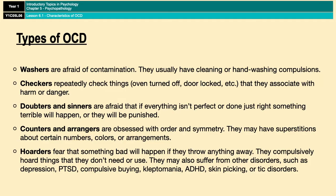There are some more well-known and stereotypical types of OCD, such as people who have hand-washing compulsions, people who repeatedly check things, and people who count and arrange things and have this need for symmetry. However, there are also some less well-known forms, such as people who are afraid that if everything isn't in perfect order something terrible will happen or they'll be punished — known as being a doubter or a sinner. The general theme around OCD is being afraid that something will happen if something isn't done properly or a certain number of times.